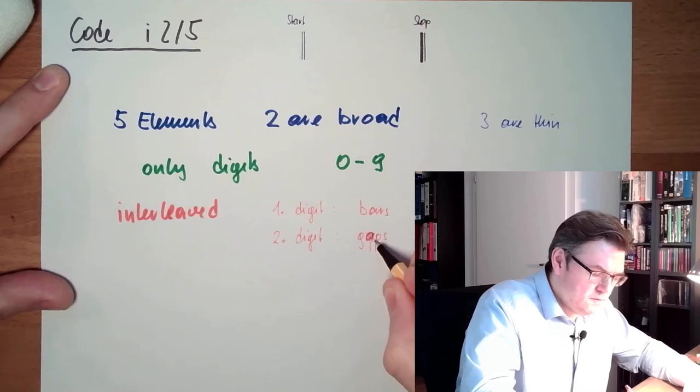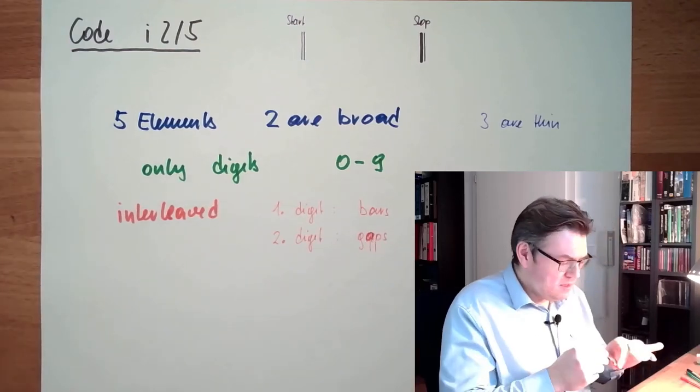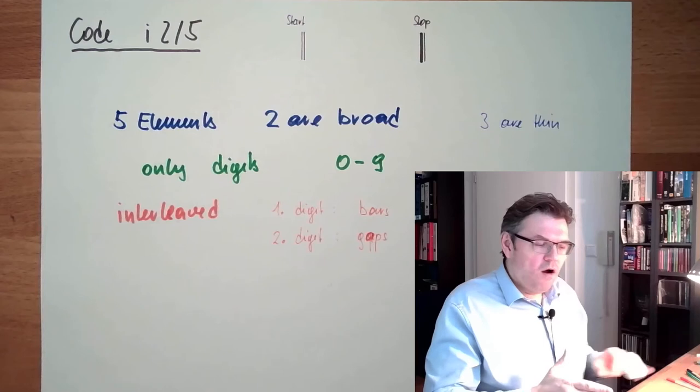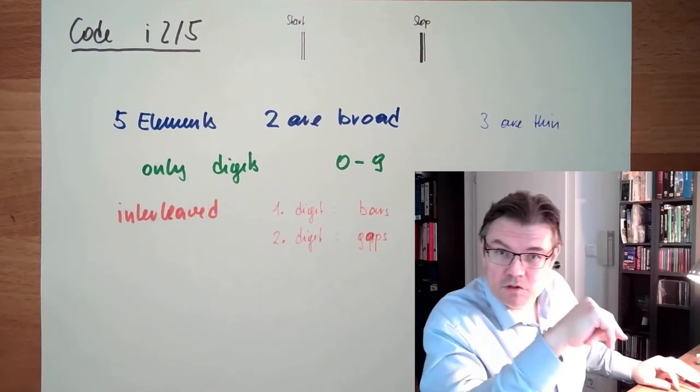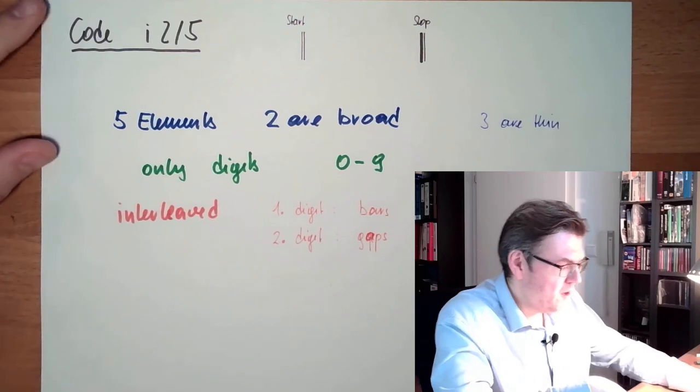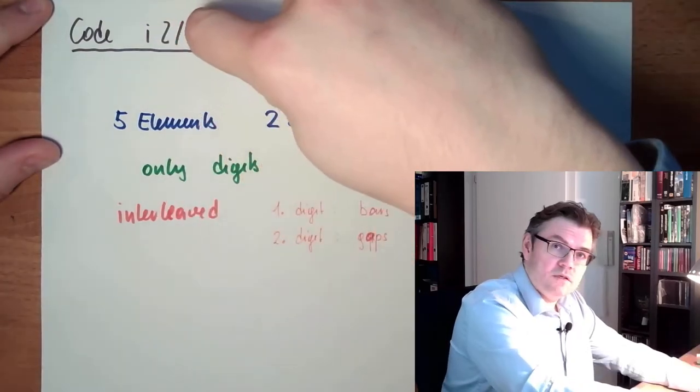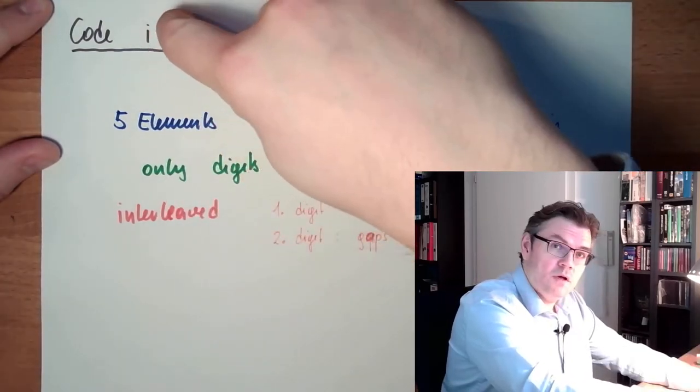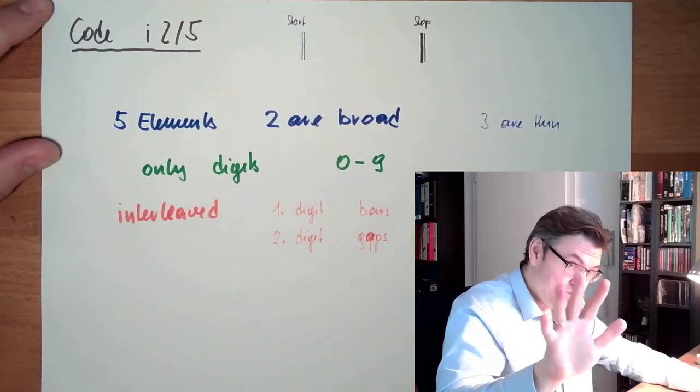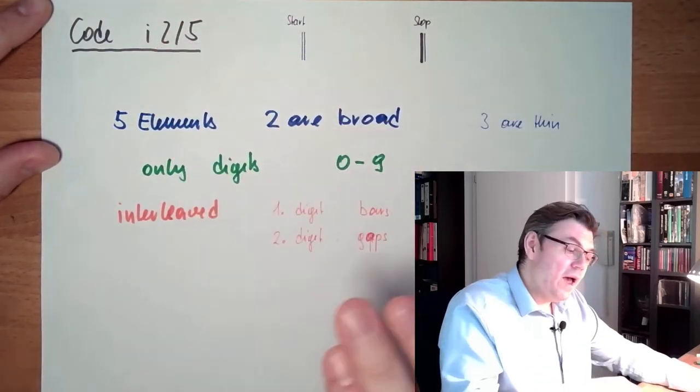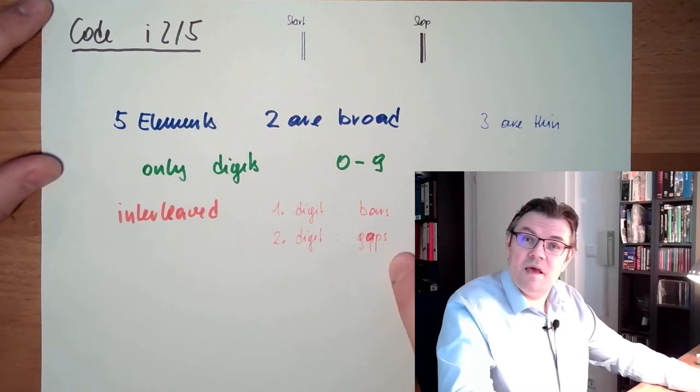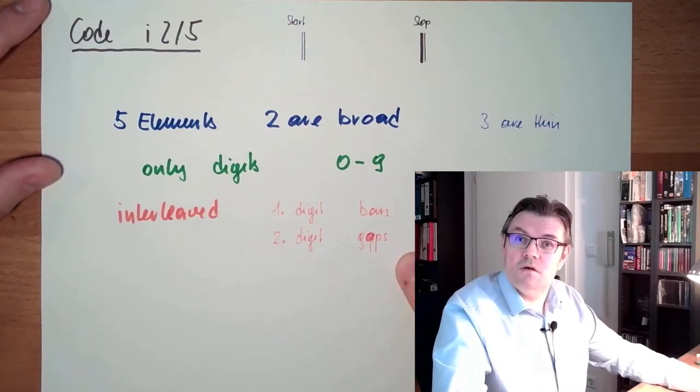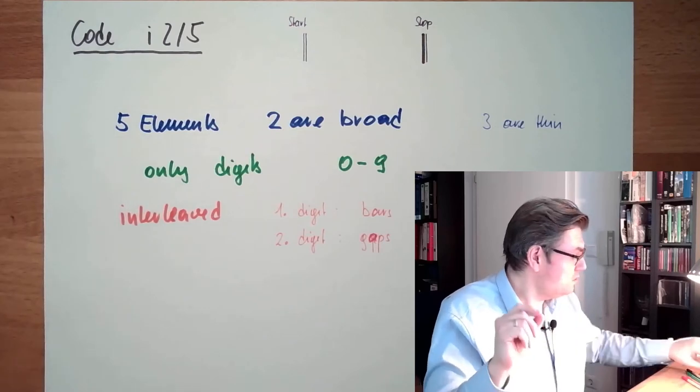Gaps. So this means a combination of bars and gaps are already two numbers. So we have five bars, two of them abroad, and in between we have five gaps, two of them abroad. And in the bars the first digit, in the gaps the second digit is coded.